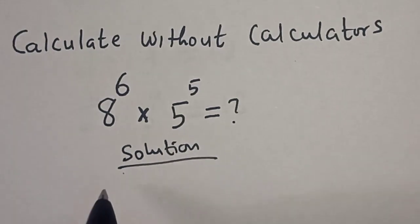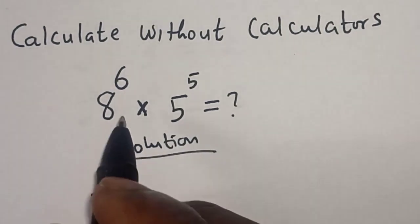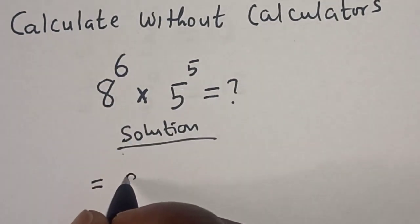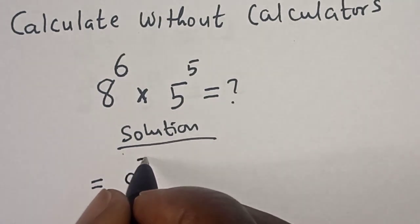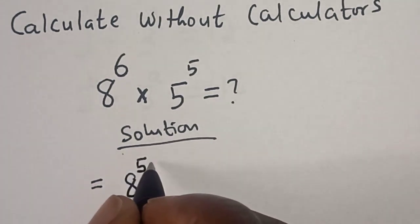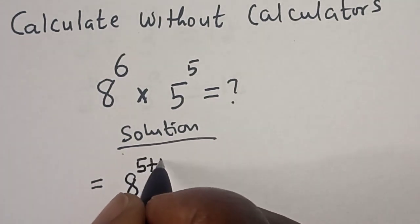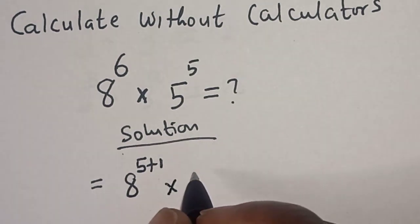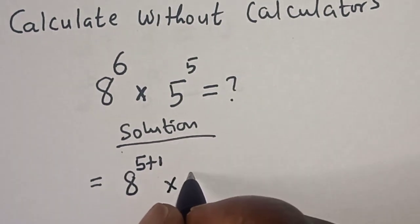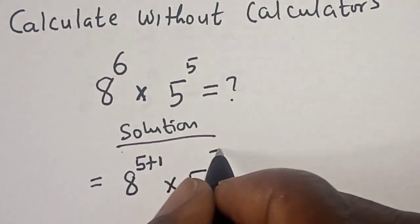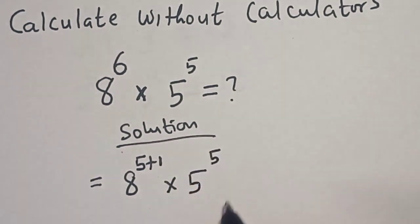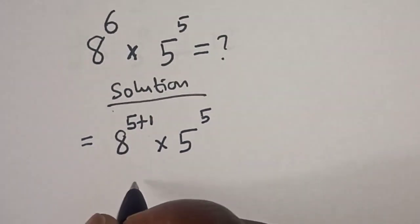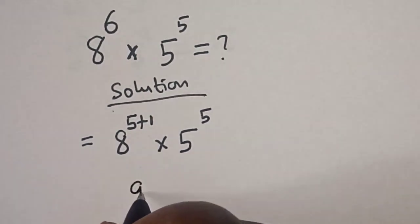This is equal to 8 raised to power 6, which can be written as 8 to the power of 5 plus 1, multiplied by 5 to the power of 5.